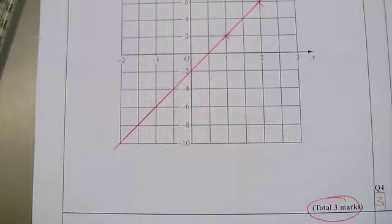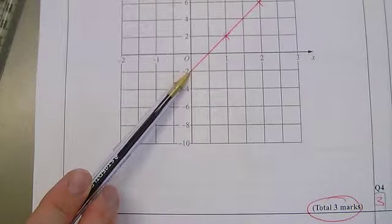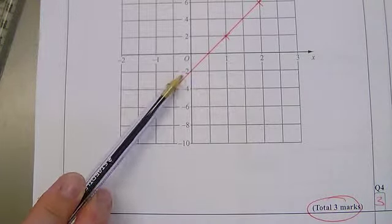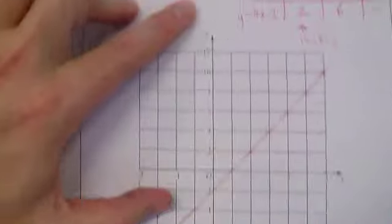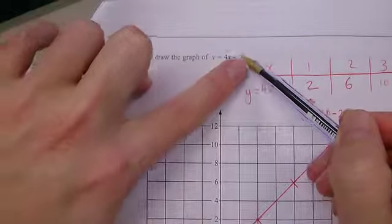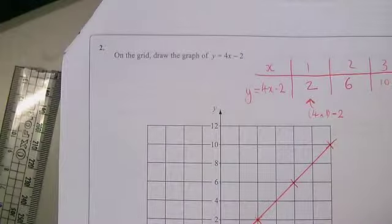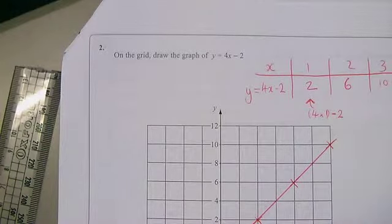Do you notice something as well? If I just bring your attention to this point here, can you see where the line goes through the y-axis? See, that's minus two. What was it on the graph at the end? 4x minus two. We call that the y-intercept - that's where that graph should have gone through the y-axis.